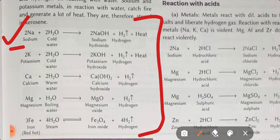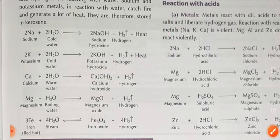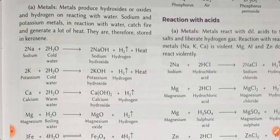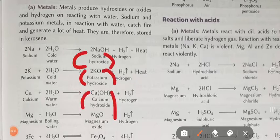Two molecules of sodium react with cold water to give sodium hydroxide, hydrogen gas and heat. 2K - potassium reacts with cold water H₂O to give potassium hydroxide, hydrogen and heat. So the common thing is: when metal reacts with water, it gives hydrogen gas and produces hydroxide ions - sodium hydroxide, potassium hydroxide, calcium hydroxide and magnesium hydroxide. Hydrogen gas is common in all.